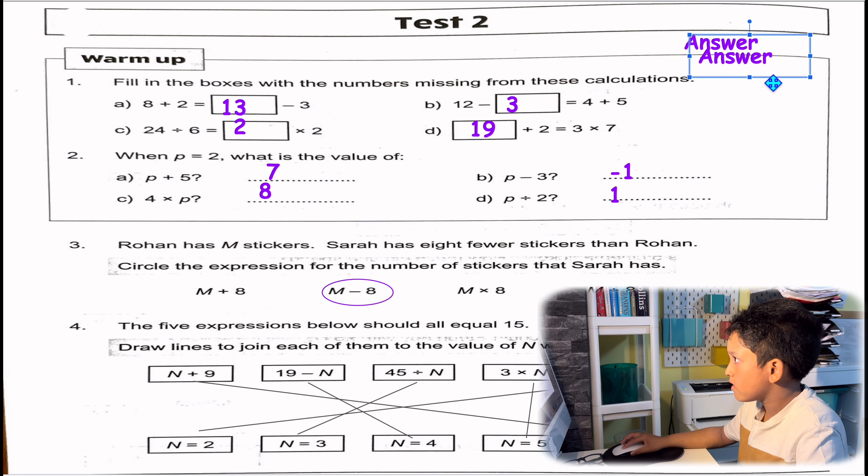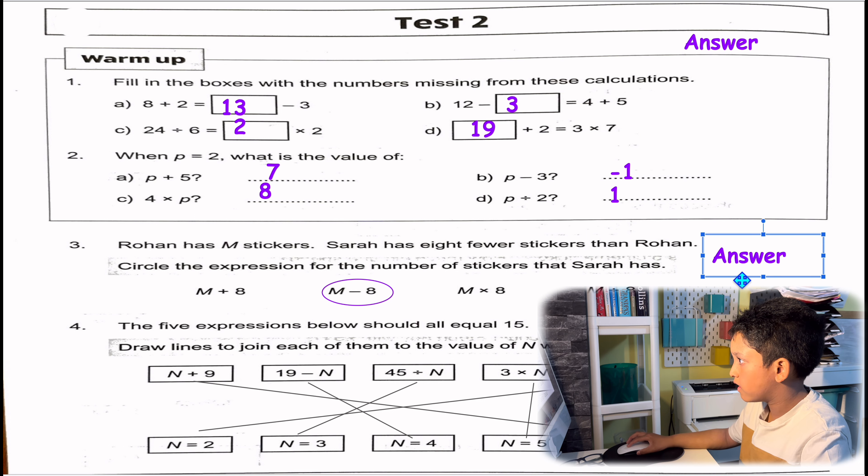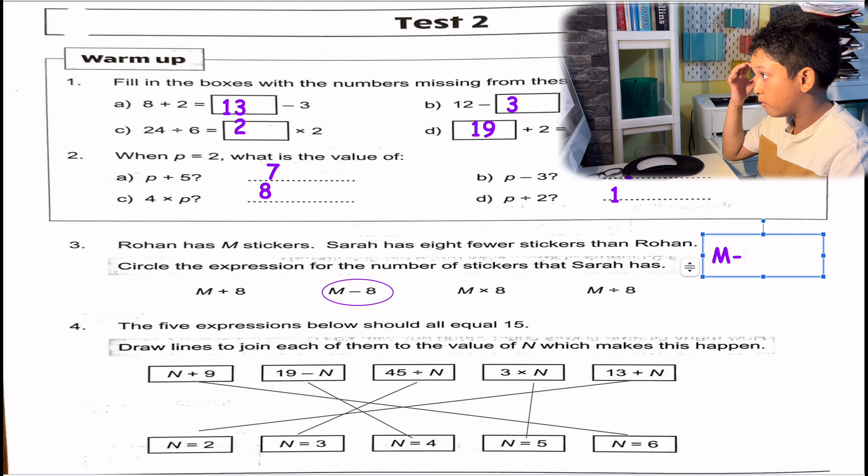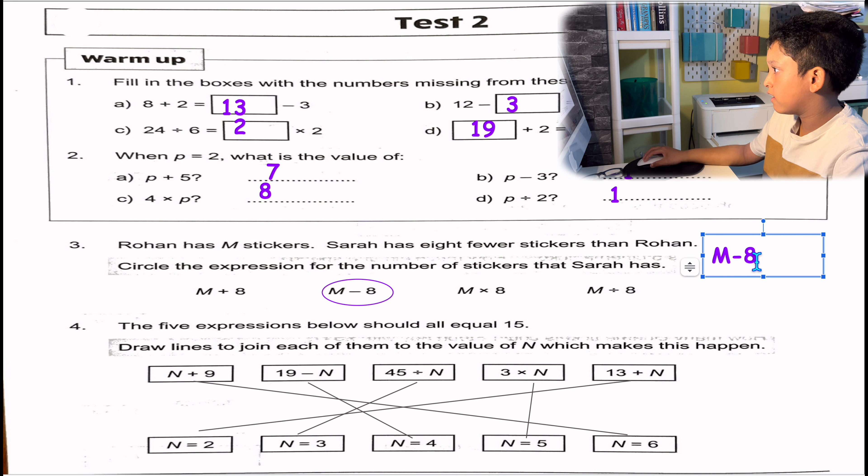The explanation for question 3: If Rohan has M stickers and Sarah has 8 fewer, M would be taken away by 8 since Sarah has 8 fewer stickers than Rohan. And M is how many Rohan has. Take away 8 will give you Sarah's.